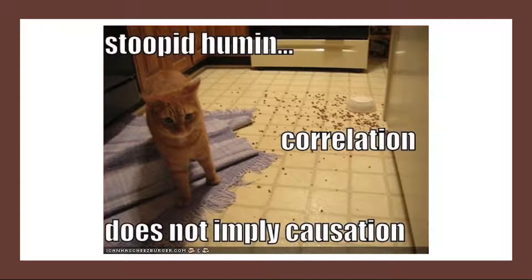Another strength of correlational research is that it's often higher in external validity than experimental research. There's typically a trade-off between internal and external validity: as greater controls are added to an experiment, internal validity increases, but often at the expense of external validity as artificial conditions are introduced. In contrast, correlational studies typically have low internal validity because nothing is manipulated or controlled, but they often have high external validity since the results are more likely to reflect relationships that exist in the real world. This trade-off means correlational research can provide converging evidence for a theory when combined with experimental findings.